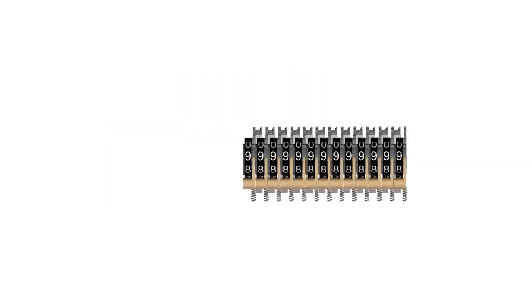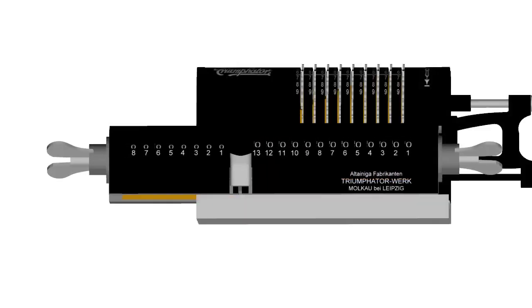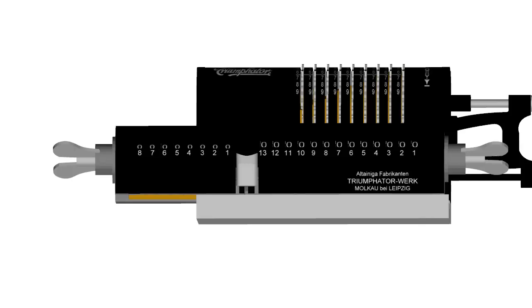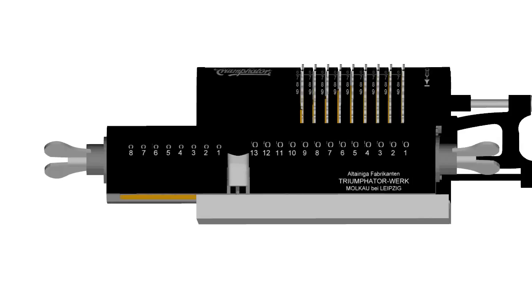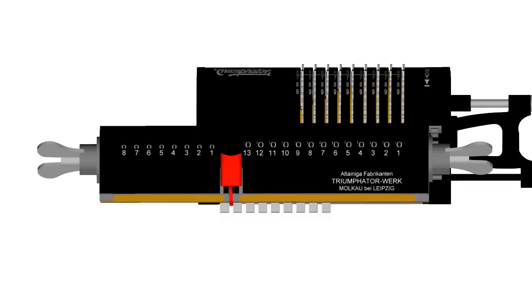The accumulator register is contained in a carriage that can be shifted to the left or right, allowing multiplication and division to be accomplished through a combination of repeated additions or subtractions and carriage shifts. The carriage movement is controlled by the shift lever, which fits into a set of slots in the base of the calculator that are aligned with the rotors.